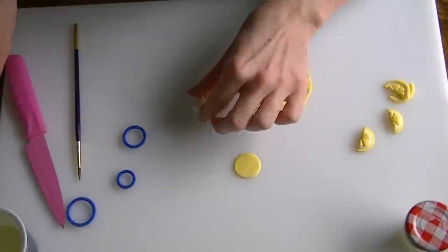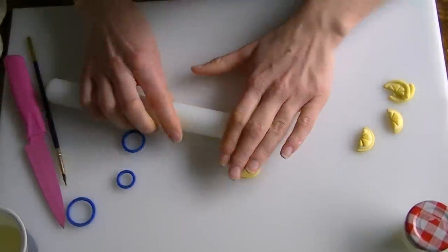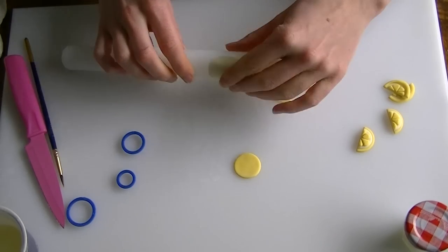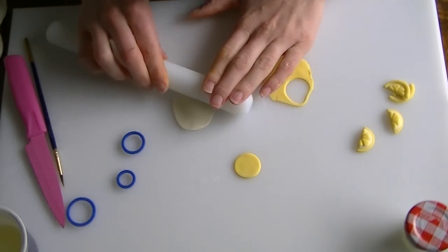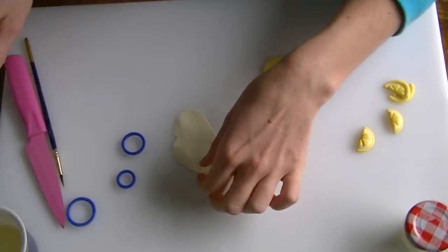Now I'm going to roll out my paler color, nice and thin. You'll find if you're using the modelling flour paste you can get it rolled out a little bit thinner than if you're using just the normal fondant.